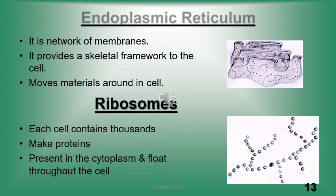The next cell organelle is the endoplasmic reticulum. It is a network of membranes that provides the skeletal framework to the cell, and its main role is to move material around in the cell — it acts as a transporter in the cell. The next organelle is ribosomes. Each cell contains thousands of ribosomes — small granule-like structures responsible for the synthesis of protein inside the cell, known as protein synthesizers. They are mostly present in the cytoplasm or float throughout the cell.